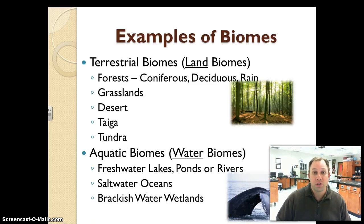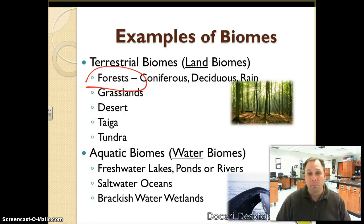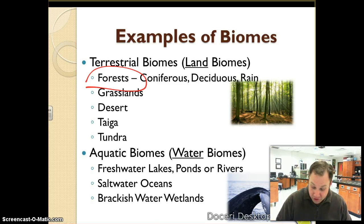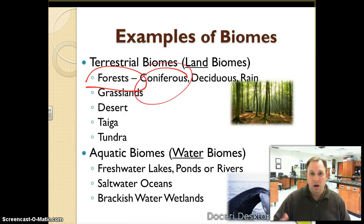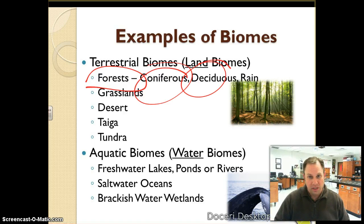Some examples of terrestrial biomes — terrestrial meaning land. We have forests, which we can break down into coniferous forests, which are our pine trees — large, tall pine trees with needle-like leaves — and deciduous forests, which are trees that lose their leaves during the winter. Then we also have our rainforest, which obviously has large amounts of precipitation.